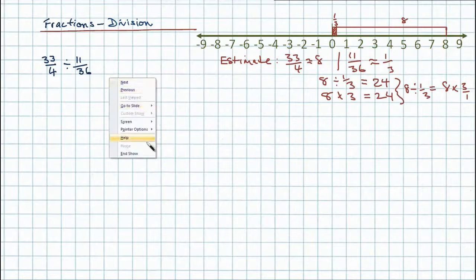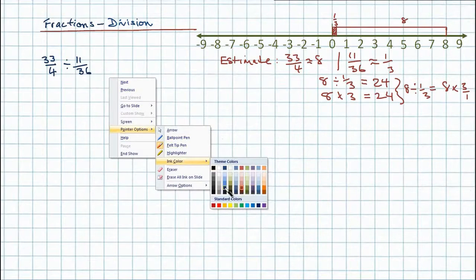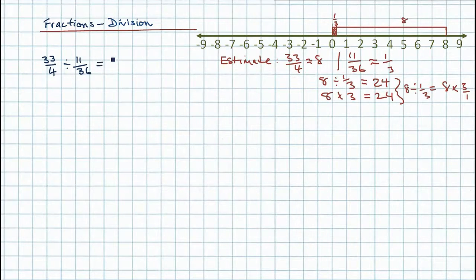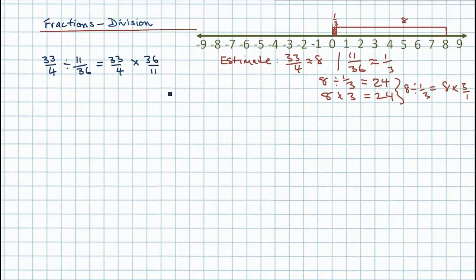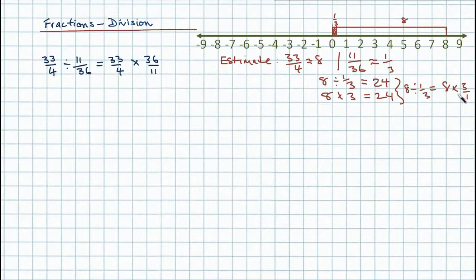Moving over to our original problem, I can simply rewrite this. First I write my dividend — that doesn't change. But I can now write multiplied by 36 divided by 11. In other words, all I've done is turn the divisor upside down. What we've got is 36, which was the denominator, has now become the numerator, and 11, which was the numerator, has now become the denominator. And we can see that's valid because with the simpler numbers, it was very clear we're entitled to do that.